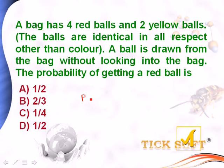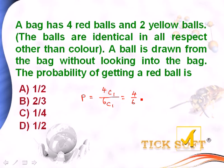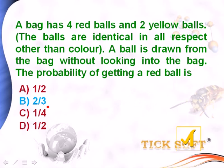The probability is equal to the chance of getting a red ball, which is 4C1, and the total number of chances is 6 (4 plus 2 is 6), so 6C1. So 4C1 is 4 and 6C1 is 6, giving 4 by 6, which equals 2 by 3. This is the probability of getting a red ball. So option b, 2 by 3, is the right answer.